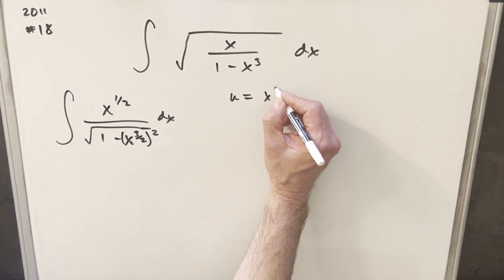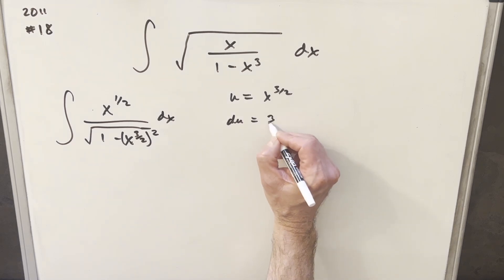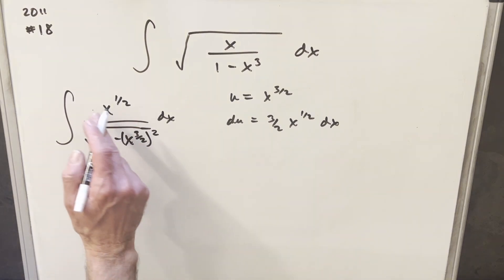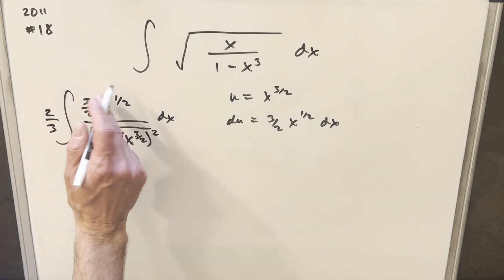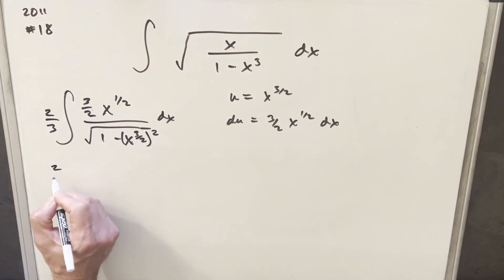So I'm just going to call u equal to x three-halves. We'll get our derivative, so du is going to be three-halves x one-half dx. And then that's actually looking really similar to what we have up here. If I just create a three-halves here, I can multiply it two-thirds out front so that I'm not changing it. This is just multiplying by one. Now let's see what happens when we do this substitution.